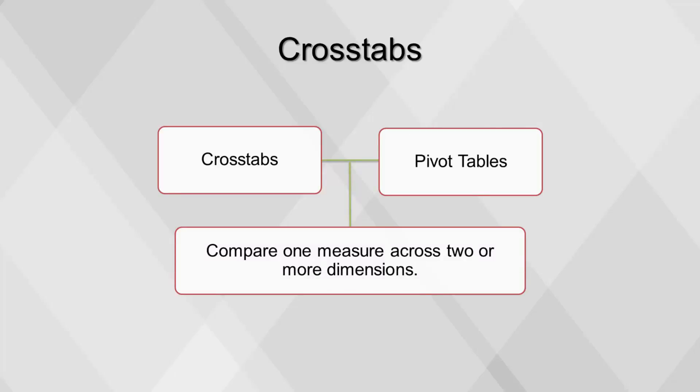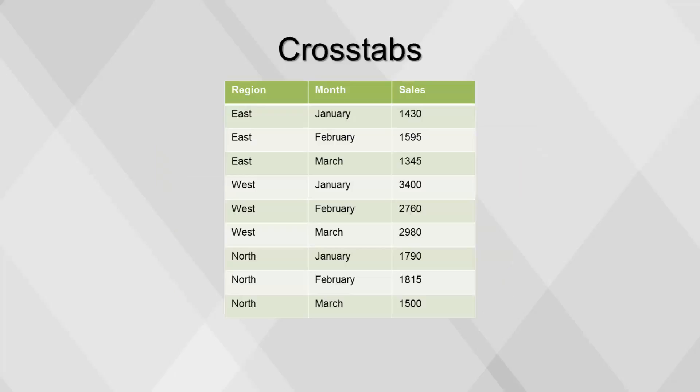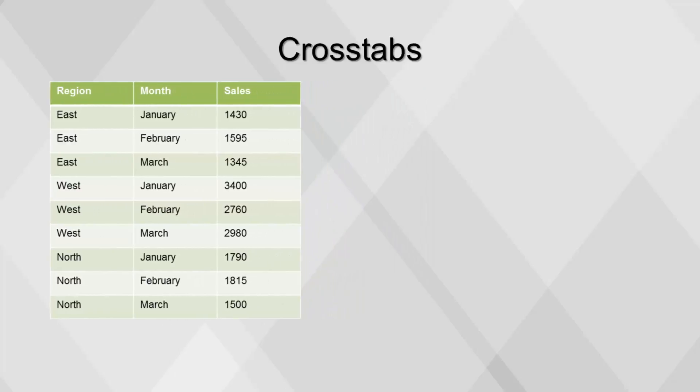One dimension will have its values transformed into columns and the other dimensions will be aggregated. The visual result will be a table with fewer rows but more columns. For example, this table shows sales by region and month. The data is stored in a form similar to how it would be captured, with one row for every combination of region and month.